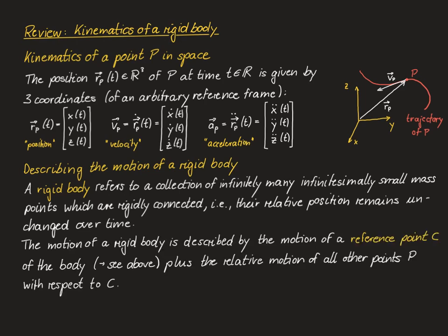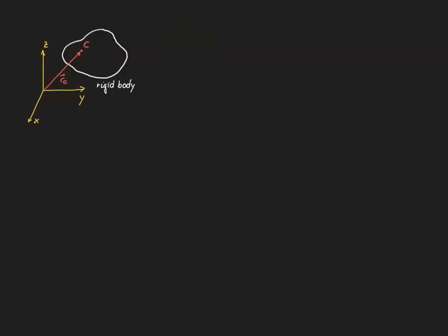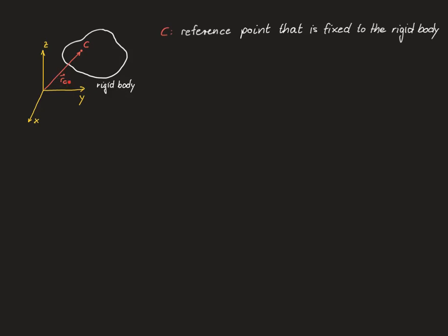The approach is to describe the motion of one point of the rigid body, called the reference point, plus the motion of all other points relative to that reference point. Here, c is selected as the reference point with position vector rc, and p is an arbitrary point with rcp defined as the vector from c to p. The position of p is simply rc plus rcp.